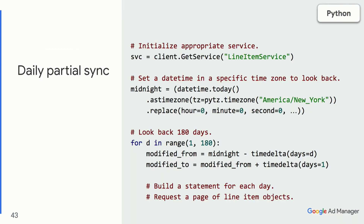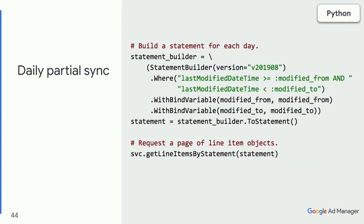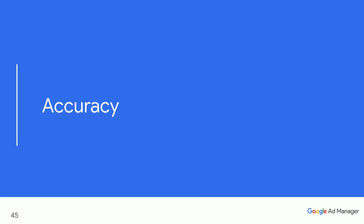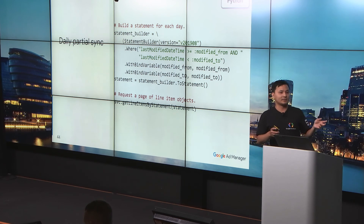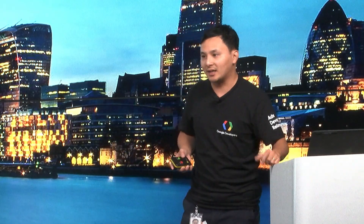To do a daily partial sync, you need to specify a time window of changes. This Python code snippet gets the exact midnight time and loops through each day in the past 180 days. The time window is then passed to the statement builder to compare with the last modified datetime. Importantly, this last modified datetime field only changes due to user actions — so if a line item automatically expires, that automatic change won't impact this field, and you can reliably use it for a partial sync.